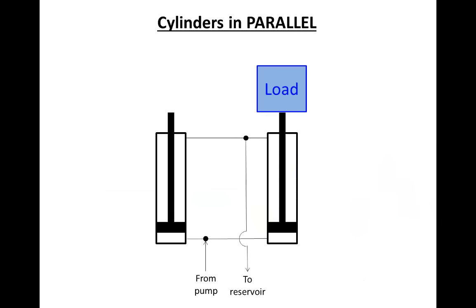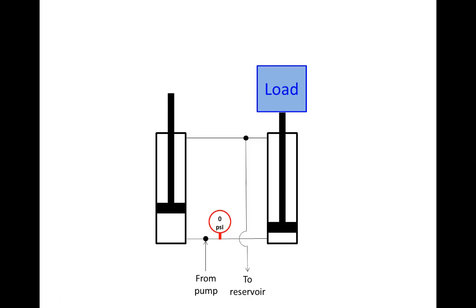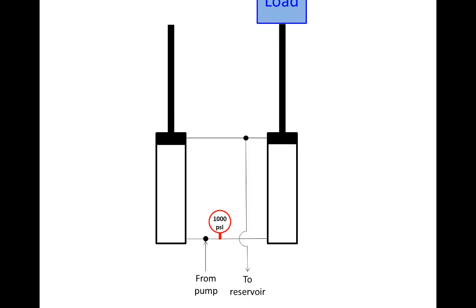Now let's talk about cylinders that are piped in parallel. The fluid from the pump is split and can go either into the cylinder on the left or the cylinder on the right, and oil from the top of both cylinders combines and returns to the reservoir. The oil would not build pressure because there is no load on the unloaded cylinder, so that cylinder extends first. Once it reaches the end of its stroke, pressure builds high enough to overcome the load on the other cylinder. So cylinders in parallel do not operate in synchronization — the one with the smaller load extends fully before the one with the bigger load even begins to move.